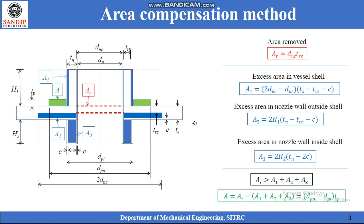Let us now see how various areas are calculated in the area compensation method. First, the area removed from the pressure vessel is denoted by AR and shown in red in this diagram. It is a rectangle having width equal to DNC and height equal to TRS. Therefore, AR = DNC × TRS.